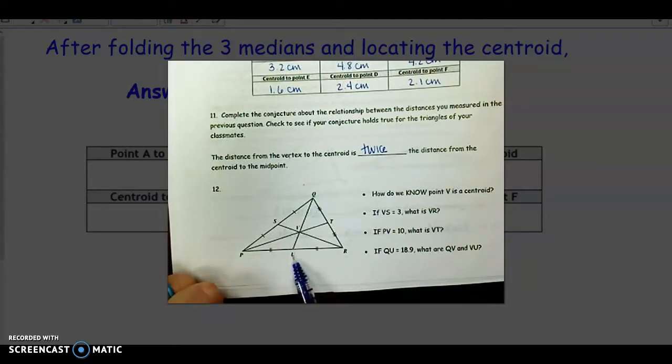So I know point U is a midpoint by these tick marks. So this has to be a median, because it starts at a vertex and goes to a midpoint. Again, vertex to midpoint. Vertex to midpoint. That's how I know V is a centroid.